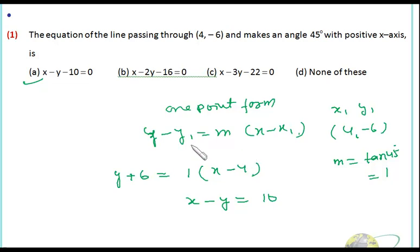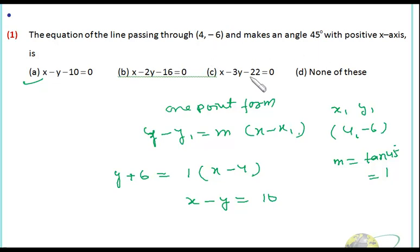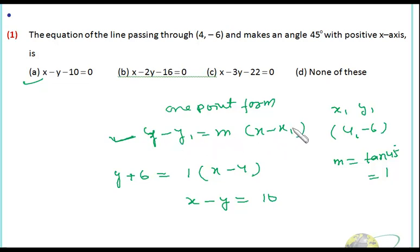So if you are conceptually clear and know the various forms of the line, this sort of problem is very easy. You just have to identify the given data — here we have one point and the slope of the line, so we use the one-point form. This is the direct formula for one-point form, and the derivation we have already discussed.